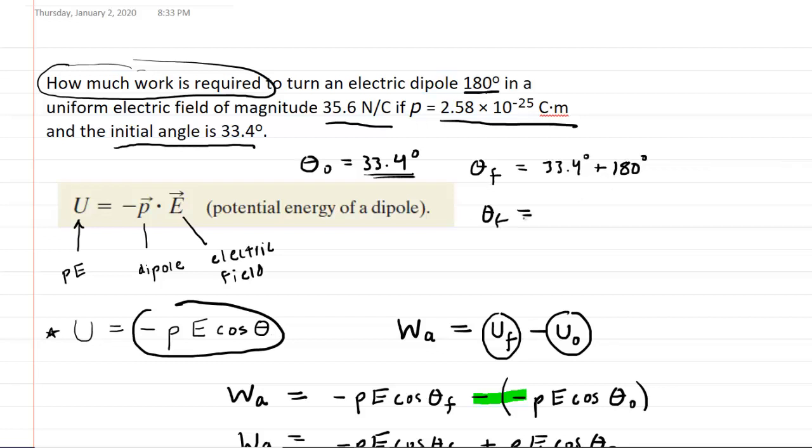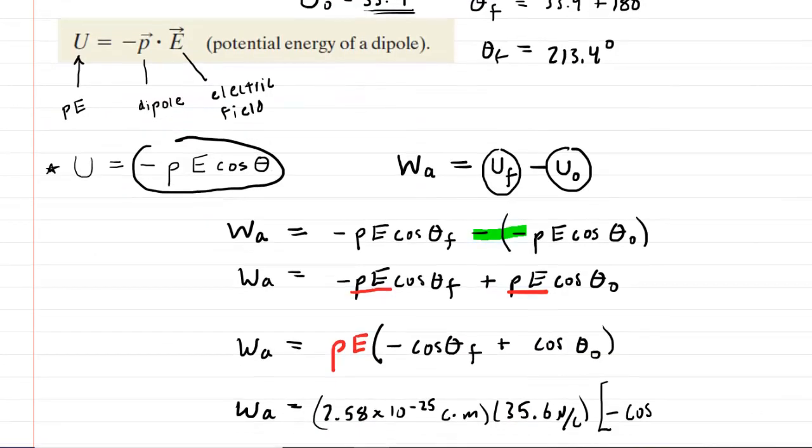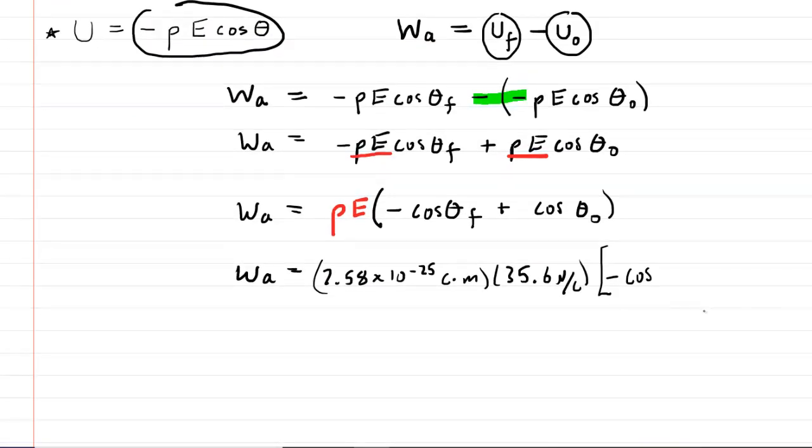And we might as well simplify that now. And that should give us 213.4 degrees. So that would be our final angle that we'll be plugging into the equation down below. And then the initial angle is 33.4 degrees. So let's go ahead and plug those in down here.